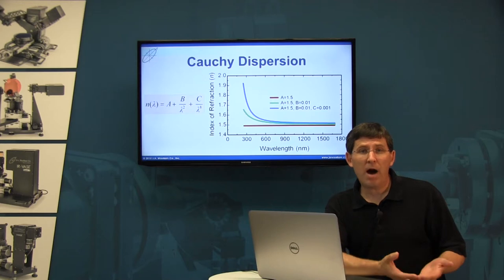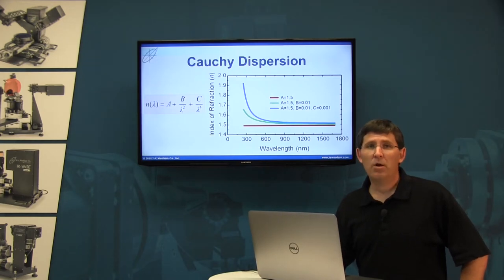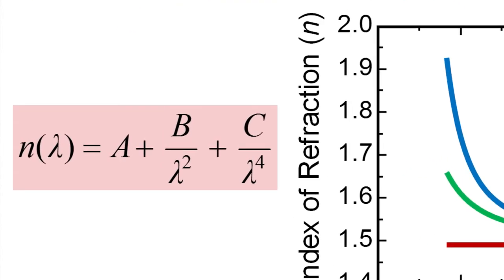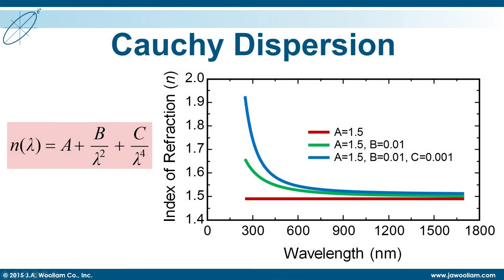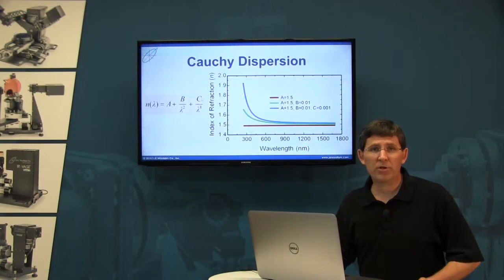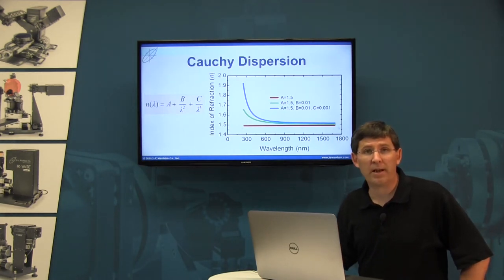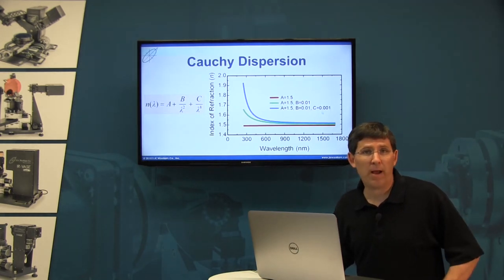We need a model that will allow us to adjust the index of refraction for any unknown film. In most cases, we're going to use the Cauchy dispersion relation. The Cauchy is a simple empirical equation that describes the index of refraction versus wavelength by three fit parameters: A, B, and C. A is the amplitude, while B and C give the index of refraction a little bit of curvature versus wavelength. If A is equal to 1.5 it would be constant at all wavelengths, but a more physical shape is for the index to increase at shorter wavelengths, which we can do by adding very small amounts of B and C.